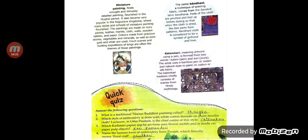Kalamkari means artwork using a pen, formed from two words: 'kalam' meaning pen and 'kari' meaning work. The artist uses a bamboo pen or kalam and natural dyes to paint on cloth — cotton or silk fabric. The Kalamkari tradition chiefly consists of scenes from Hindu mythology.